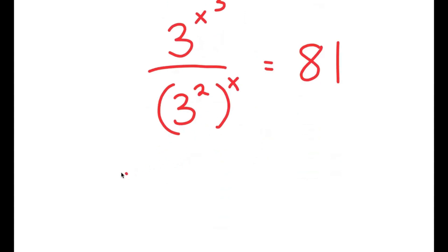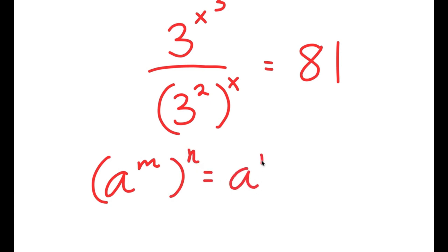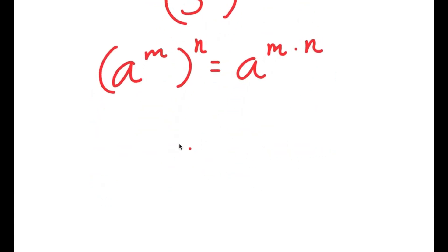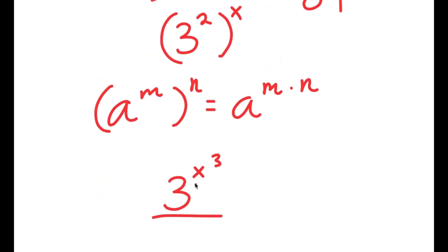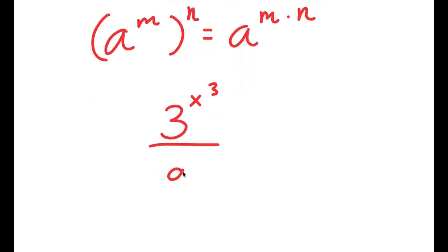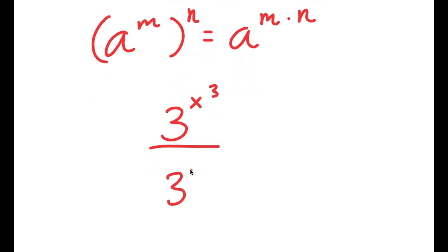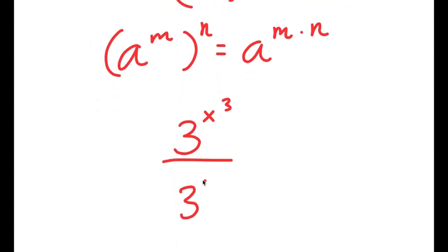If I have something in the form a to the power of m to the power of n, this is equal to a to the power of m times n. So 3 to the power of x to the power of 3, over 3 to the power of 2 times x — so 3 to the power of 2x.